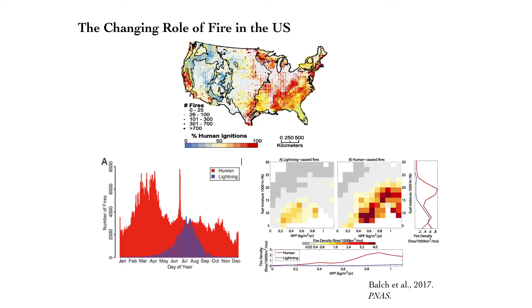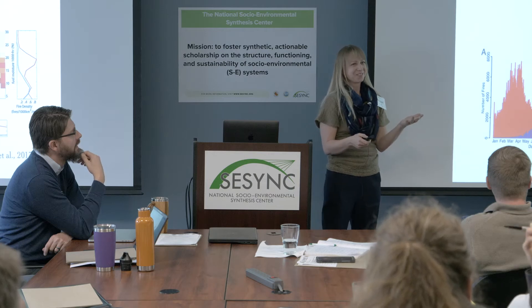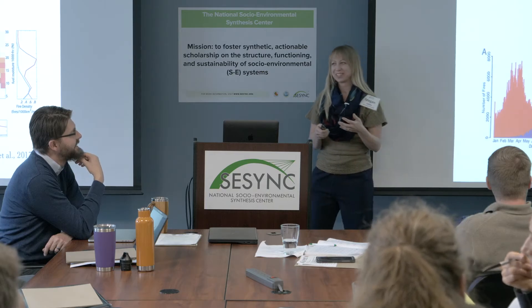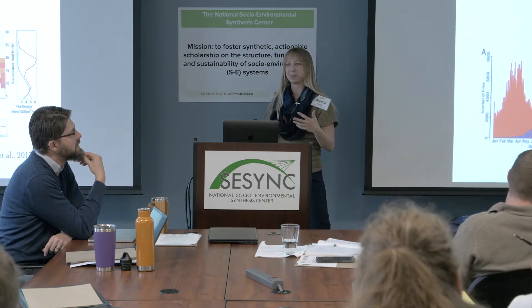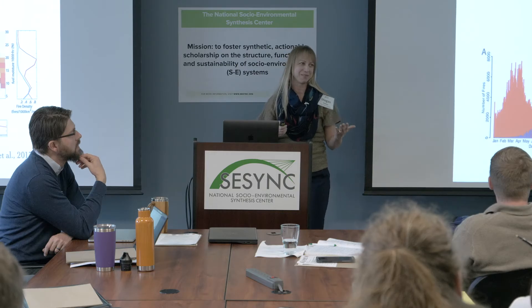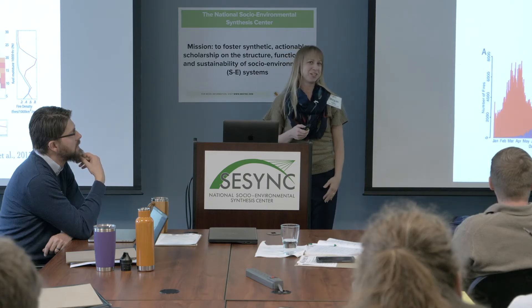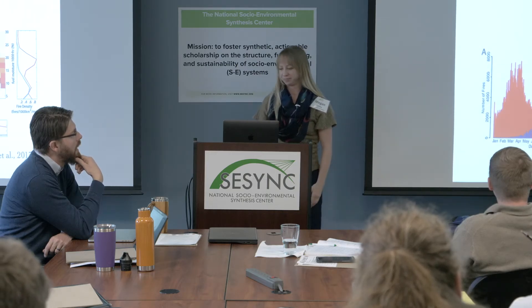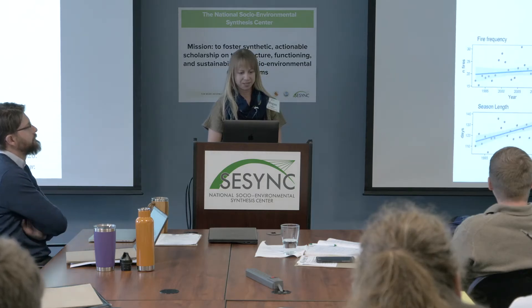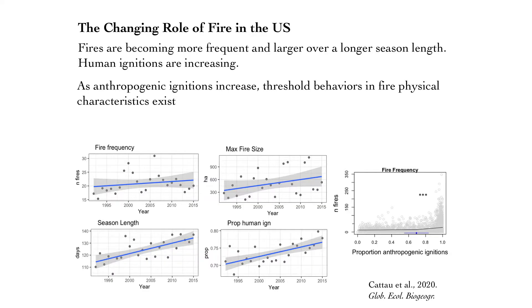Can anyone guess what this is? It's the 4th of July. Fire is fundamentally a biophysical process, but it's affected by human behavior, and sometimes that human behavior is fireworks. At a national scale, fires are becoming larger, they're becoming more frequent, over a longer fire season length, and human ignitions are increasing proportionally.